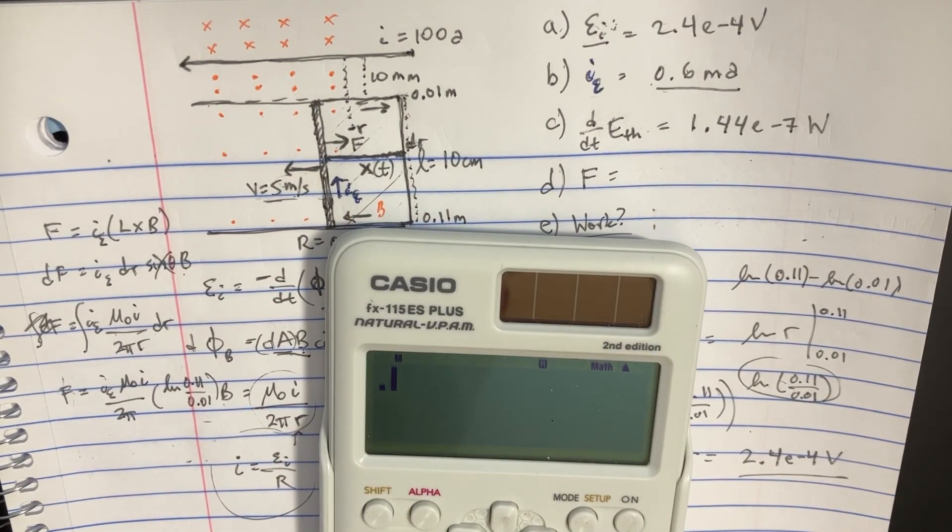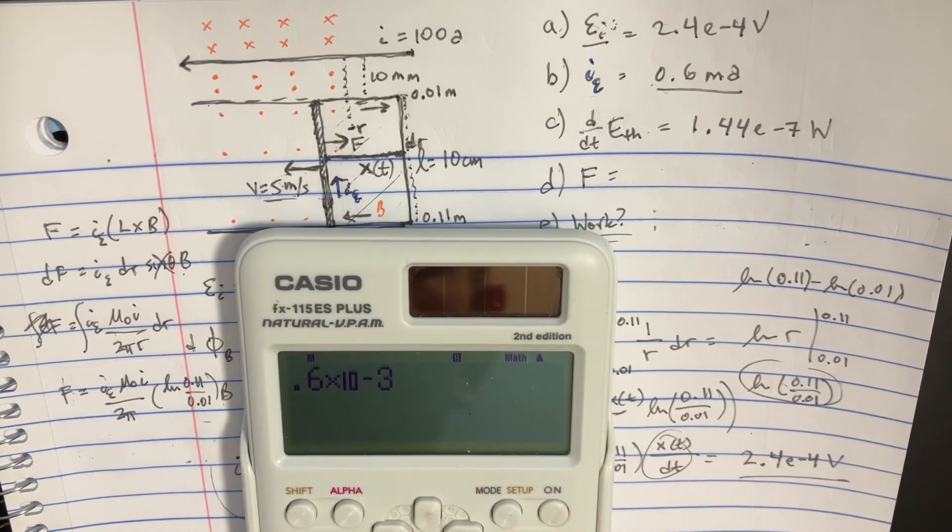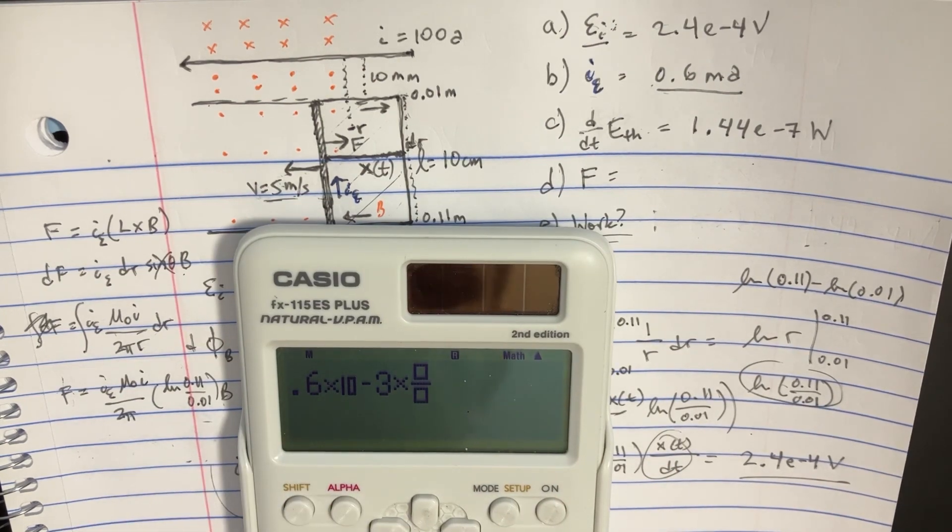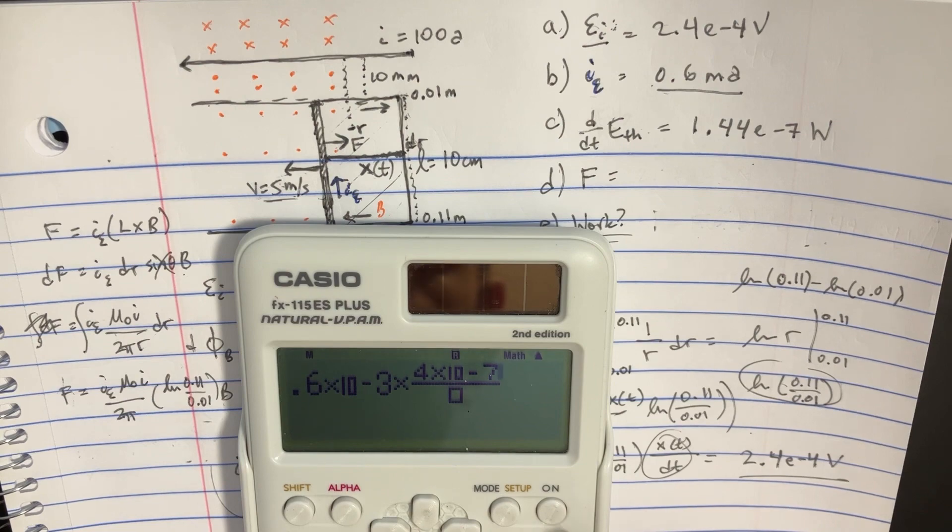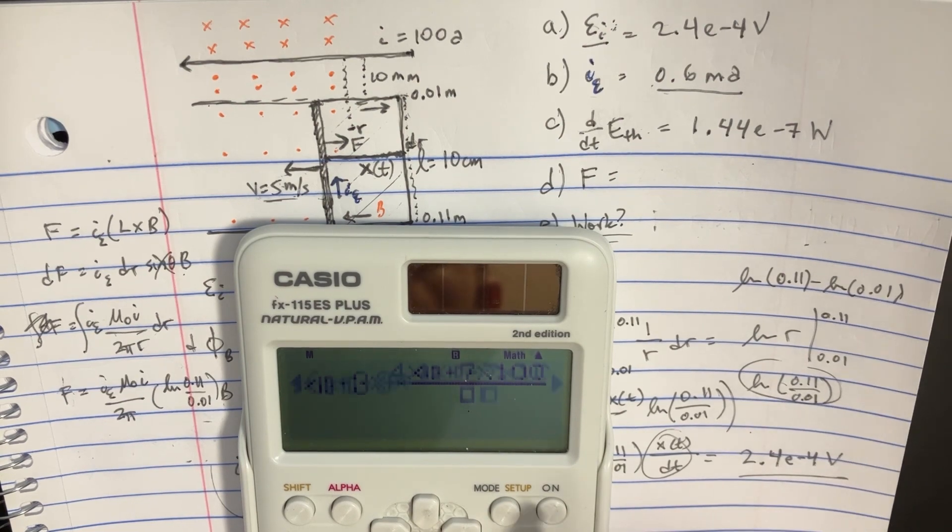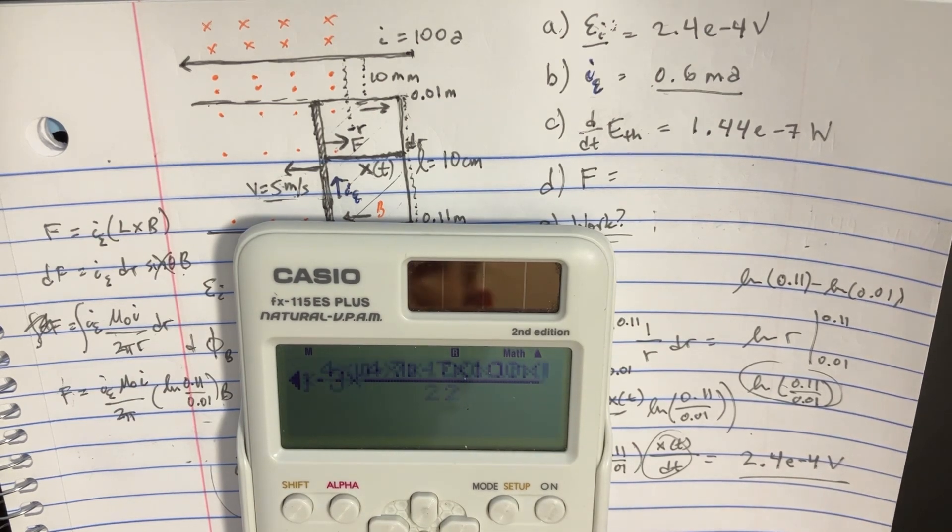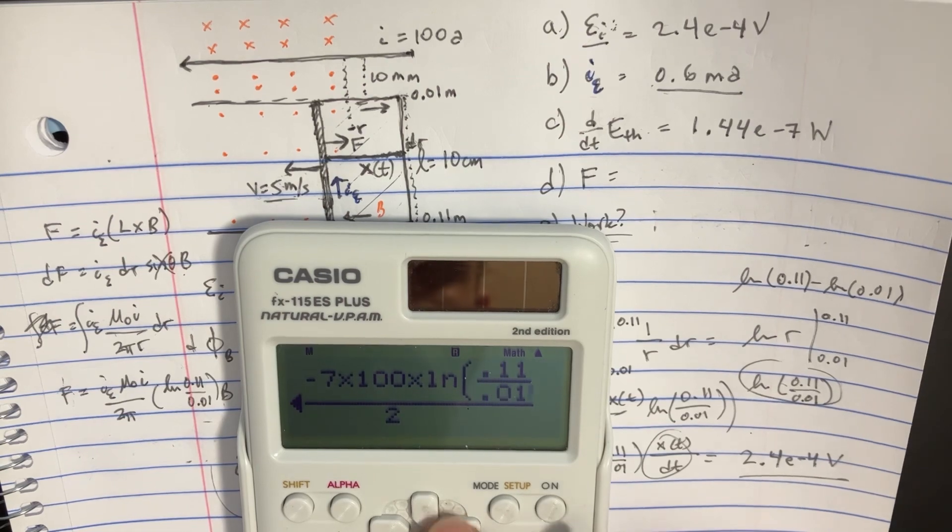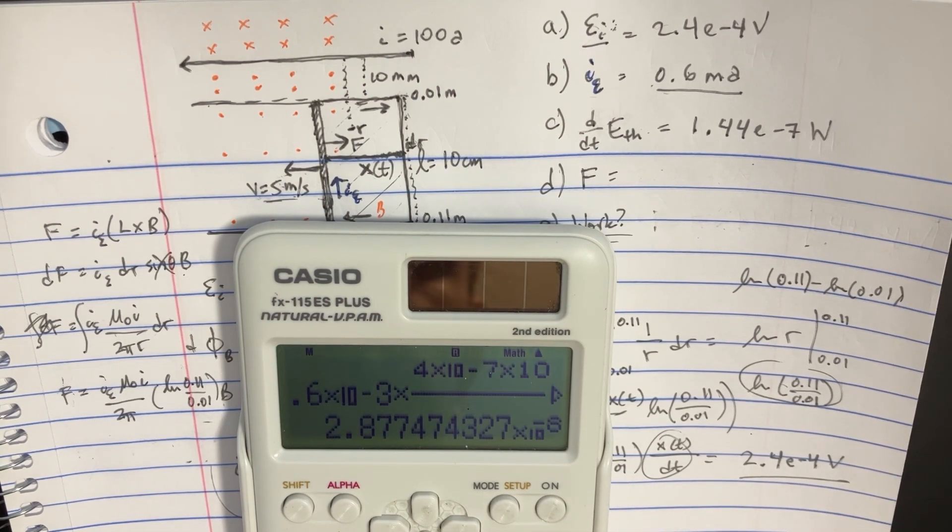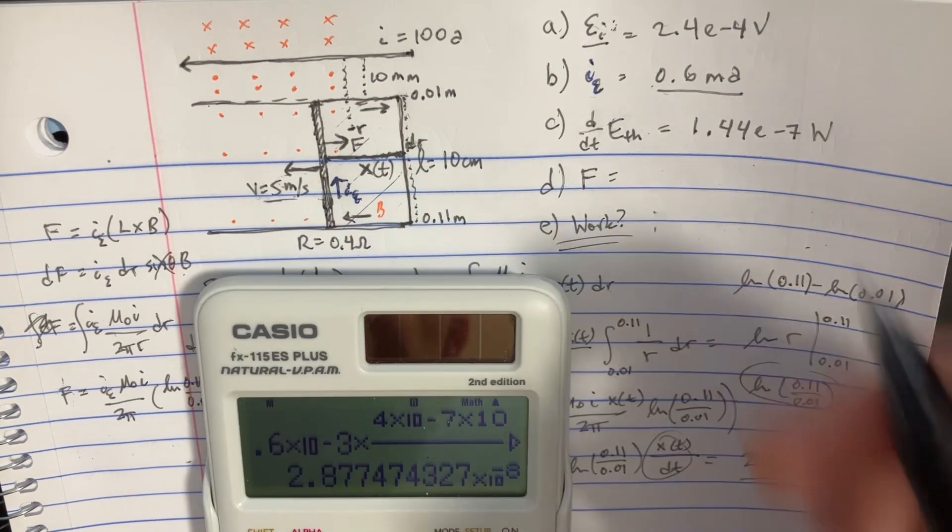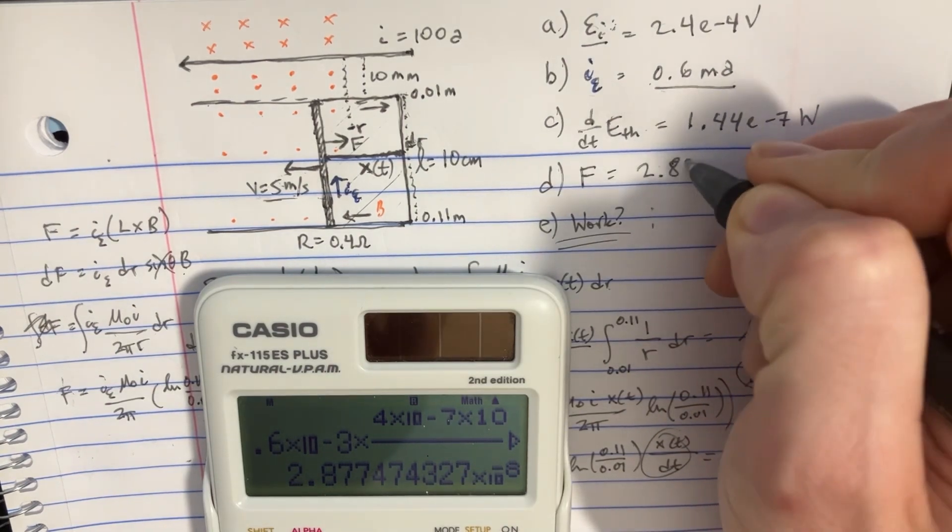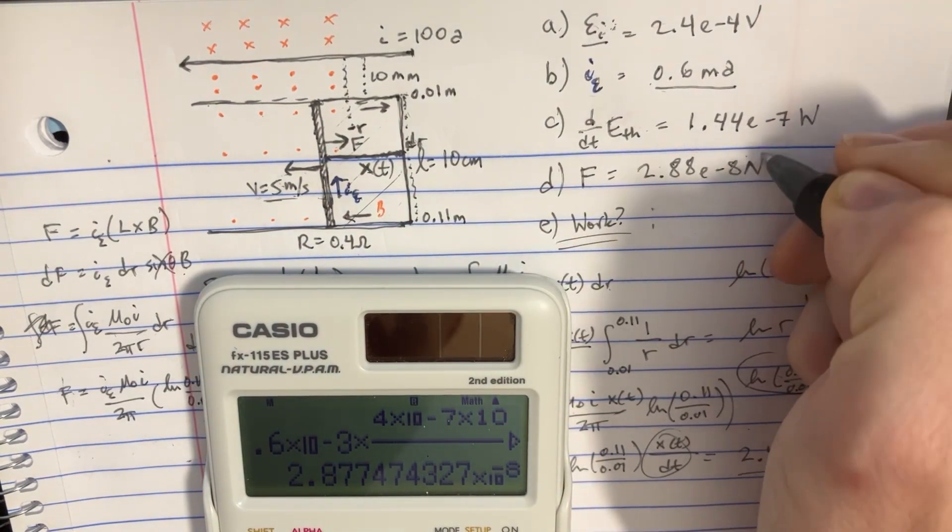So we can say, this is going to be 0.6 milliamps times mu naught is 4 e to negative 7. And we still have 100 amps. The pi will go away on the bottom there. And then multiply this by the ln of 0.11 divided by 0.01. And so we should get the force being equal to 2.88 e to the negative 8 newtons.